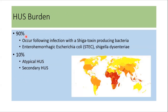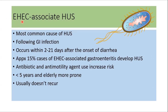90% of HUS cases are because of infection with Shiga toxin-producing bacteria, and 10% are either atypical HUS or secondary HUS. Enterohemorrhagic E. coli-associated HUS is the most common cause, following GI infection. It occurs up to 2 to 21 days after the onset of bloody diarrhea. Approximately 15% of EHEC-associated gastroenteritis develops HUS. The use of anti-motility agents like loperamide increases the risk of HUS. Young children under 5 years and the elderly are more prone, and this disease usually does not recur.